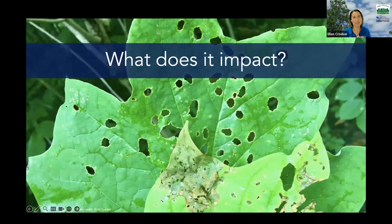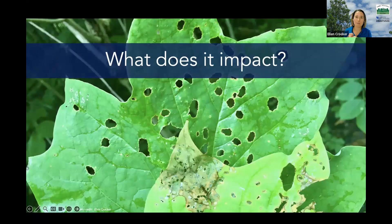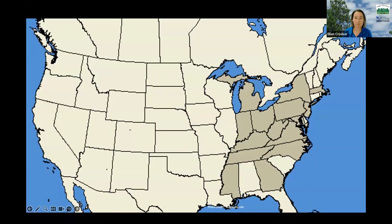Their favorite host is yellow poplar, or tulip poplar — take your pick on the name. But they also feed on some other species. Magnolias and sassafras are also susceptible, and you might see damage on those as well. Because of this you might sometimes hear them called sassafras weevils or magnolia leaf miners, in addition to yellow poplar weevils. They are found broadly throughout the eastern U.S., but are most prevalent in the central Appalachian mountains — eastern Kentucky, Virginia, West Virginia, Tennessee, and Ohio — where heavy foliage damage can occur.